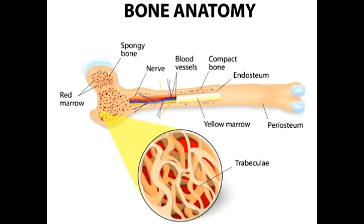The spongy bone is a tissue that lies in the interior of the bones. The compact bone acts like a protective shell, covering the lesser dense structure of spongy bones. Apart from the structure, there is a noticeable difference in the weight, density, and shape of these two bones.